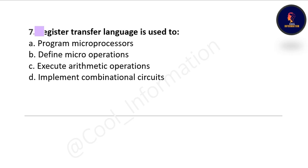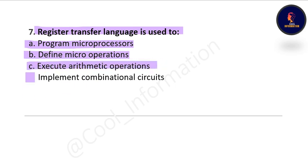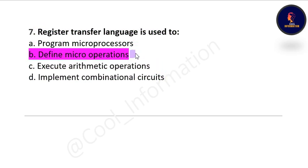Question 7: Register Transfer Language is used to — Option A: program microprocessors, Option B: define micro-operations, Option C: execute arithmetic operations, Option D: implement combinational circuits. The correct option is define micro-operations.